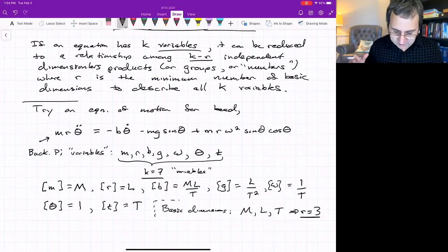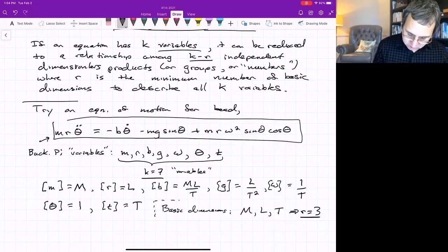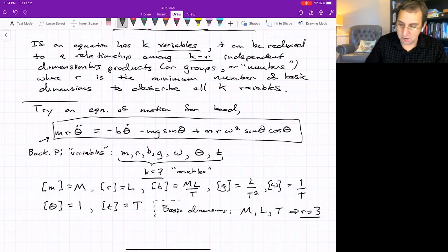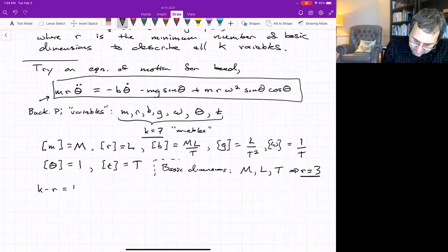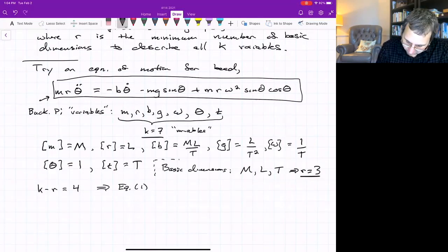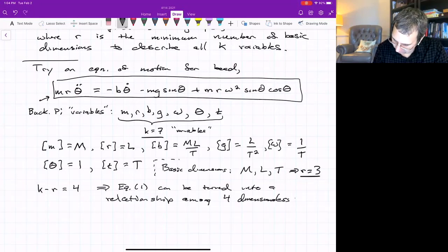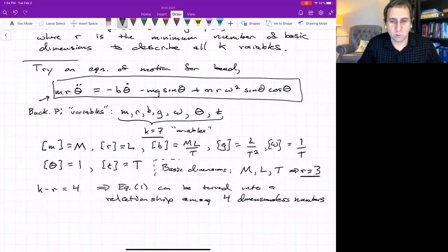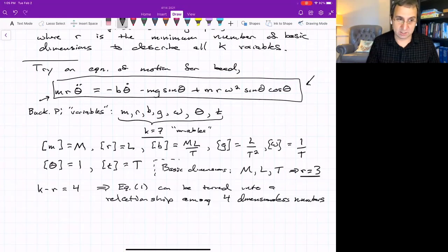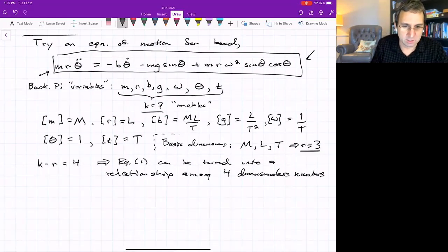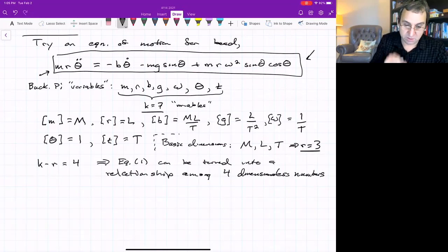What does the Buckingham Pi theorem tell us? It says that this equation can be reduced to a relationship among k minus r dimensionless numbers. K minus r equals four. That means equation one can be turned into a relationship among four dimensionless numbers or products or groups. So that means we need four dimensionless numbers to non-dimensionalize this equation.